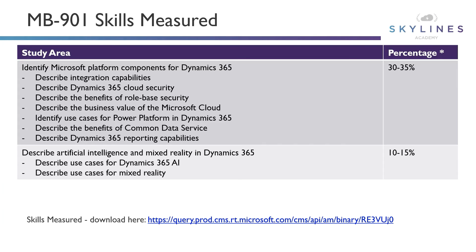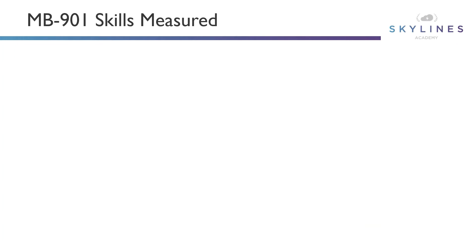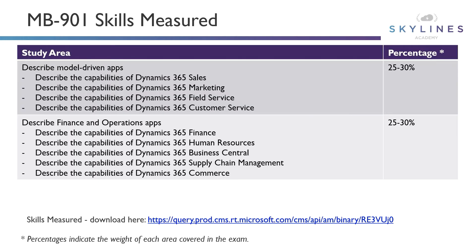You may have also noticed that there's a percentage next to each area. Microsoft provides this weight to signify the percentage of the exam that will focus on each area, helping you understand if one area will be covered more heavily than others. You can see here that the platform components carry a heavier weight at 30 to 35 percent, versus the artificial intelligence and mixed reality area which is only 10 to 15 percent.